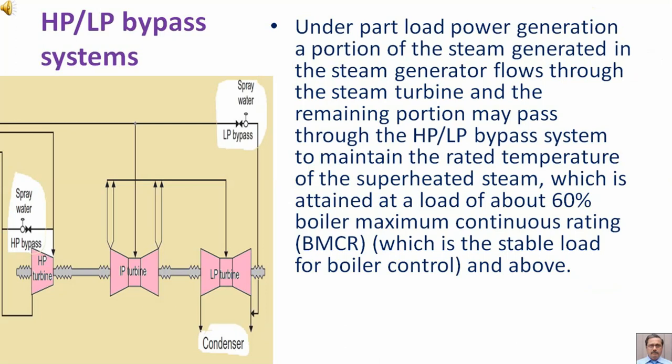Under part load power generation, a portion of the steam generated in the steam generator flows through the steam turbine and the remaining portion may pass through the HP-LP bypass system to maintain the rated temperature of the superheated steam, which is attained at a load of about 60% boiler maximum continuous rating, which is the stable load for boiler control and above.